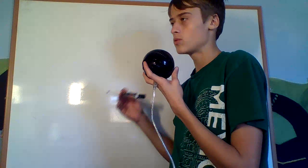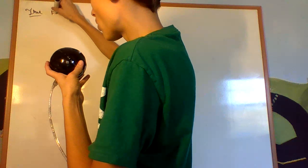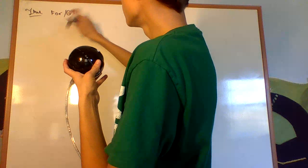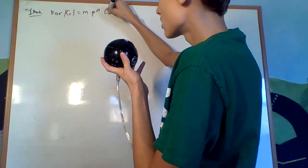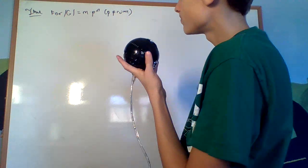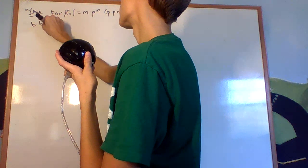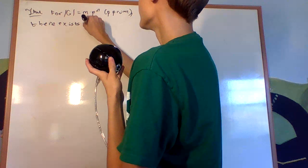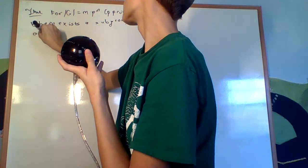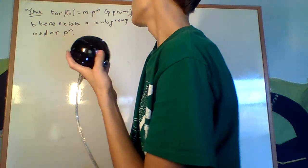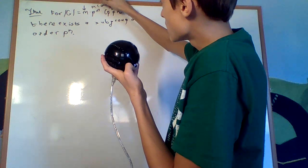In this video, I'll be proving Sylow's Theorem number one. What does it say? For the order of G equals m times p to the n, for p a prime, there exists a subgroup of order p to the n. We also have the requirement that m is less than p.